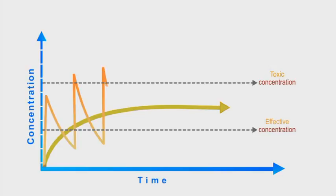If the drug has a narrow therapeutic window, the peak might be in the toxic zone or the trough might be in the ineffective zone.